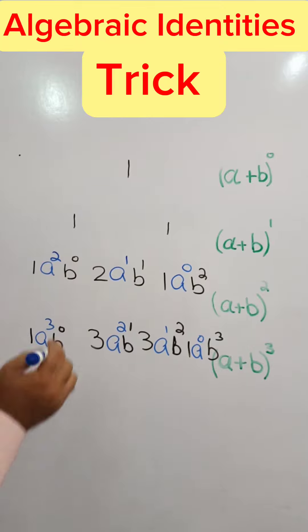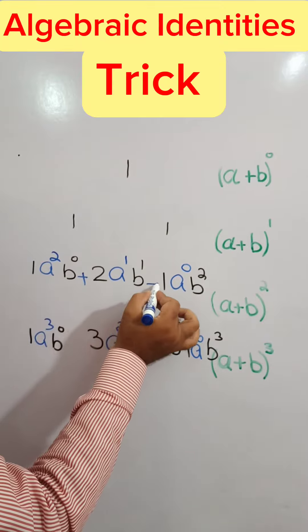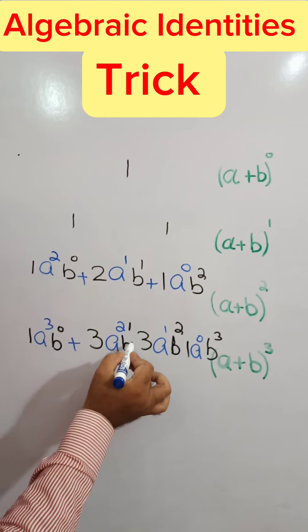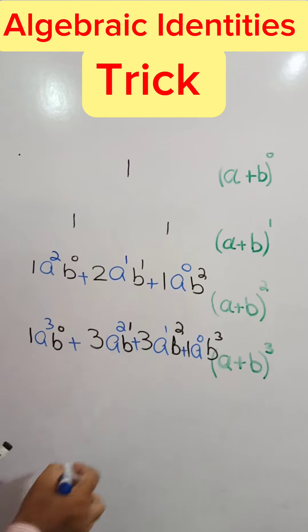And add all the terms. This one is a magical formula of algebraic identities.